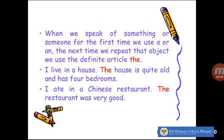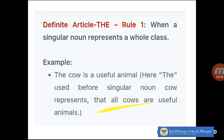When we speak of something or someone for the first time, we use 'a' or 'an.' The next time we repeat the object, we use the definite article 'the.' For example, if I say 'I live in a house,' I'm mentioning the house for the first time. But if I'm going to tell you something more about my house, I will say 'the house is quite old and has four bedrooms.' In the same manner: 'I ate in a Chinese restaurant — the restaurant was very good.' When I'm mentioning something again, I use the article 'the.'